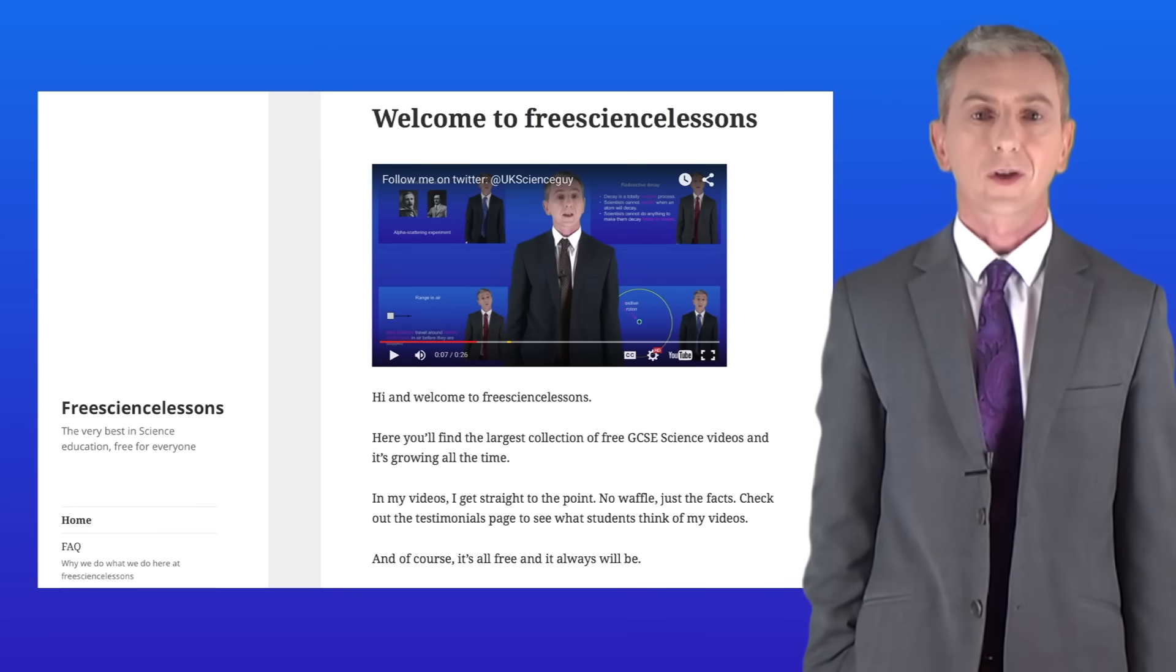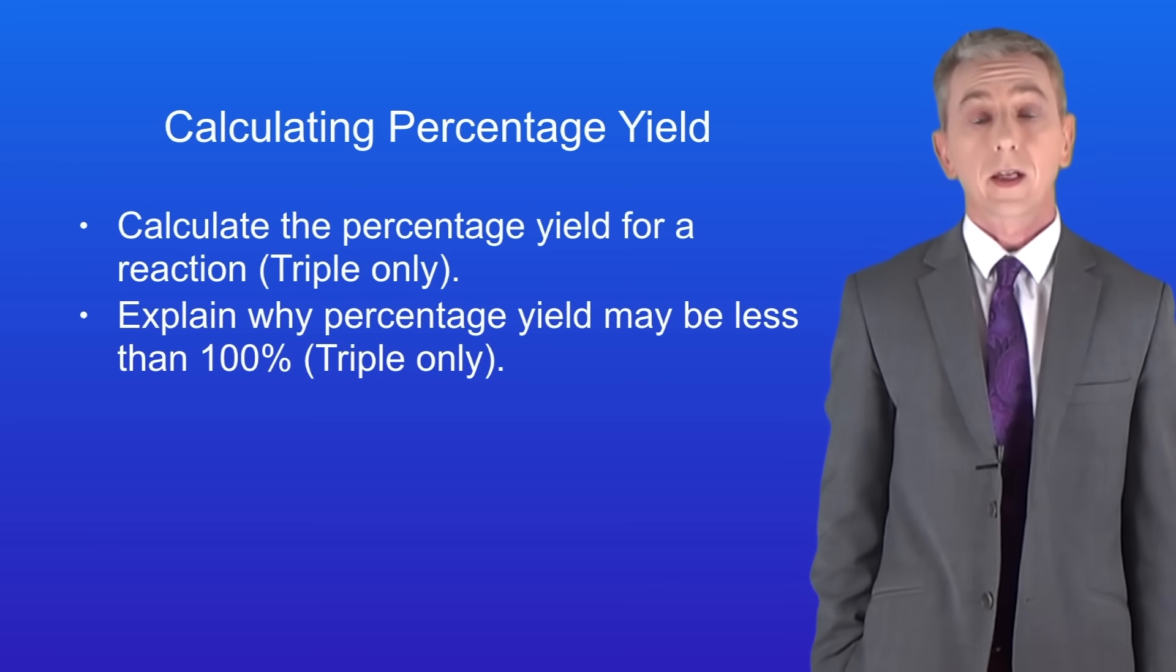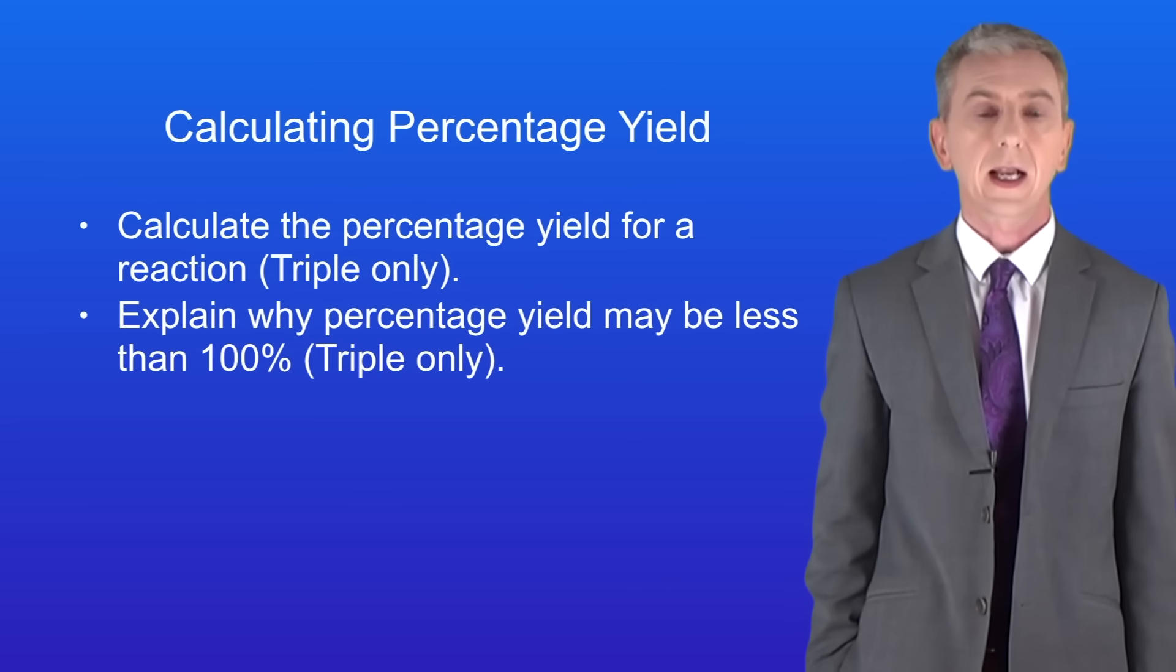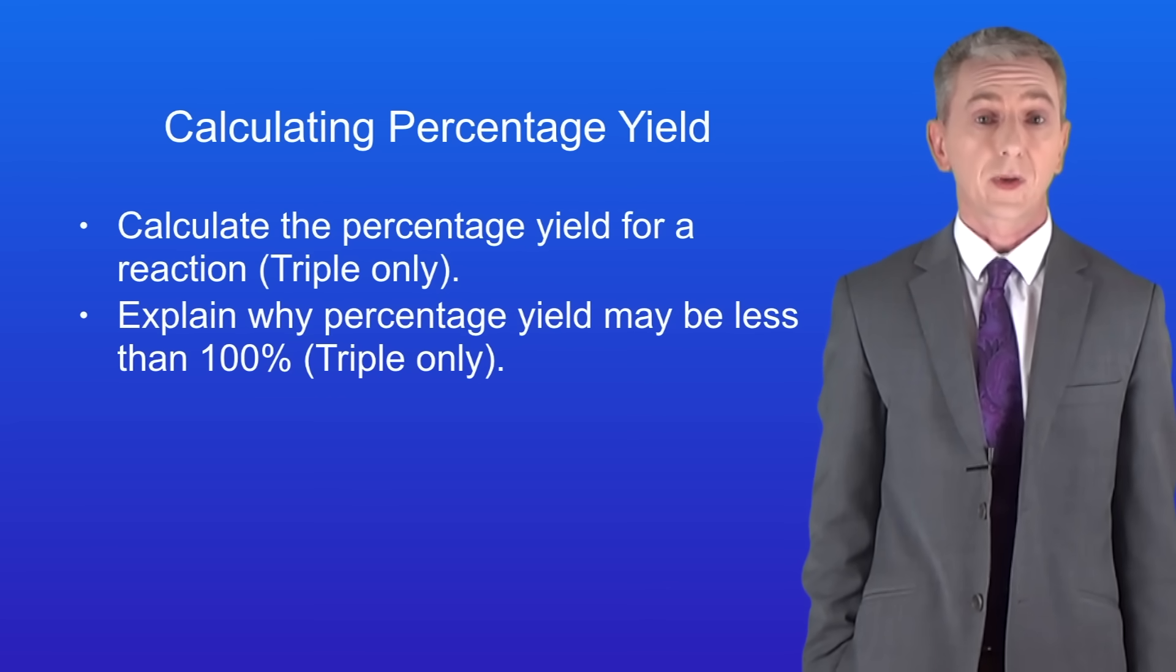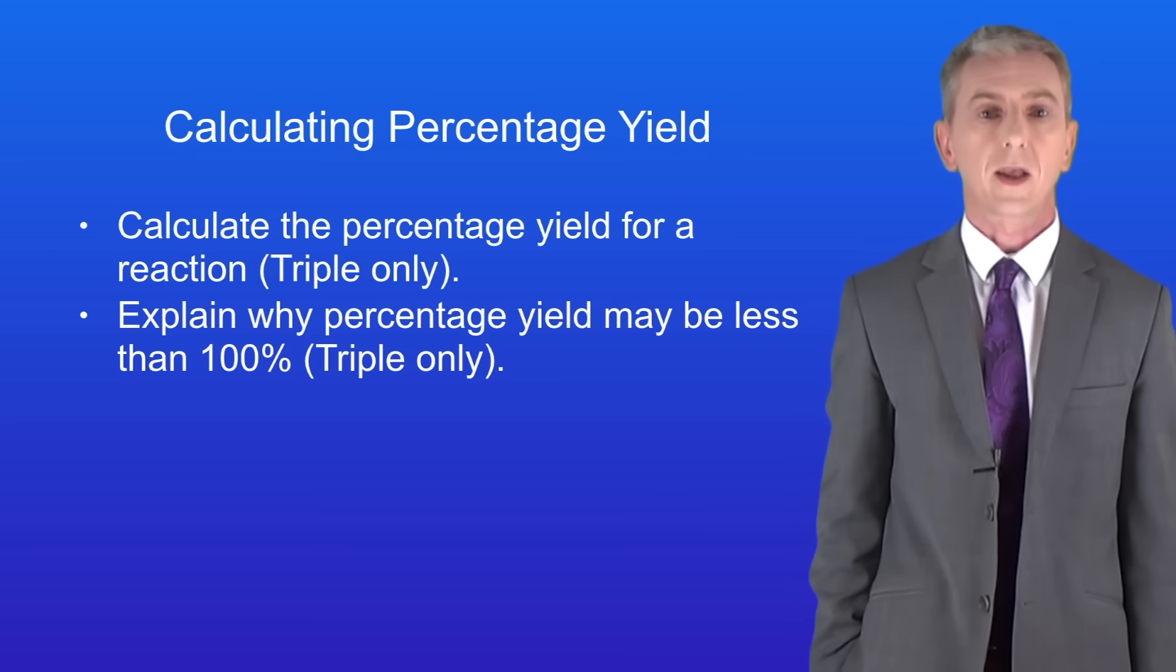Hi and welcome back to freesciencelessons.co.uk. By the end of this two-part video you should be able to calculate the percentage yield for a reaction. You should then be able to explain why the percentage yield may be less than 100%, and this works only for the triple science students.